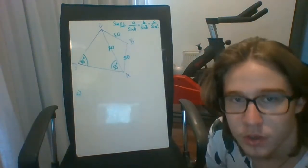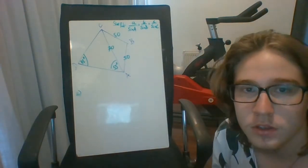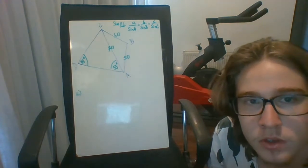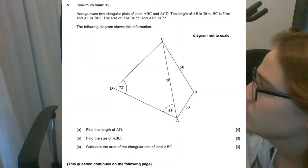Hello everybody, today we're going to be going over a trigonometry problem at the IB math studies level. The problem gives us that Haraya owns two triangular plots of land, shown here.